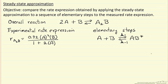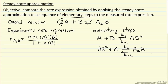The first step in that sequence is a molecule of A reacting with a molecule of B to form a reactive intermediate, AB*, indicating it's reversible. The rate constant for the forward reaction is K1, and for the reverse reaction, K-1. The second step has this reactive intermediate reacting with another A molecule to make the final product A₂B. Adding these two elementary steps together gives the overall reaction, and the reactive intermediate disappears.